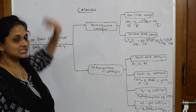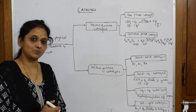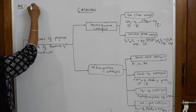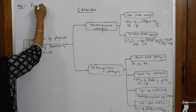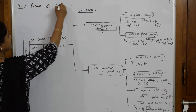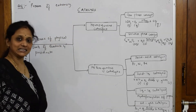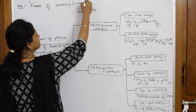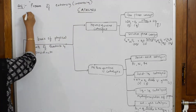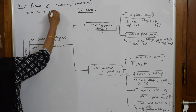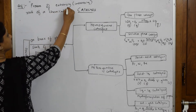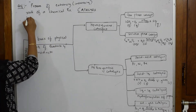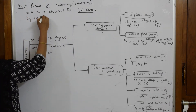Let's define catalysis. For a one-mark answer, the definition is: catalysis is a process of increasing the rate of a chemical reaction by adding a catalyst.